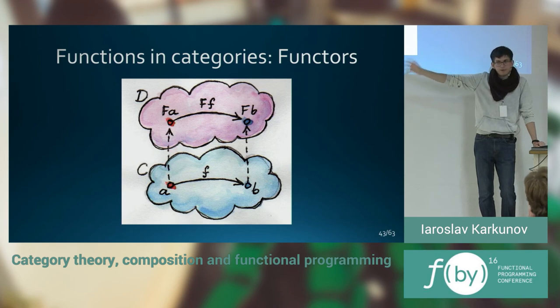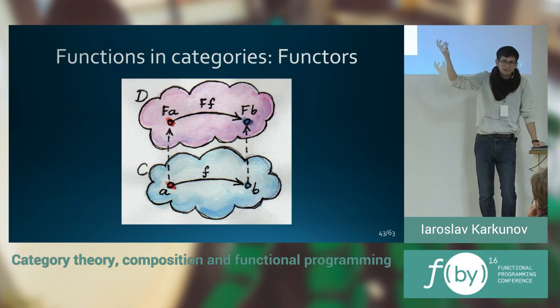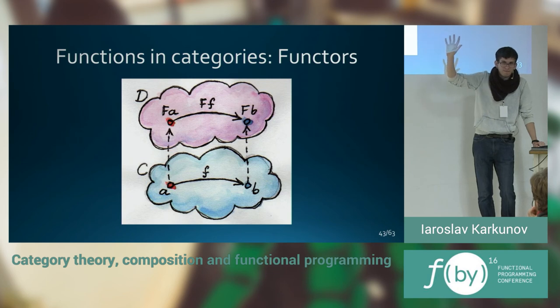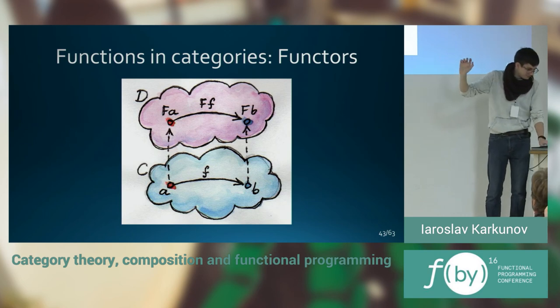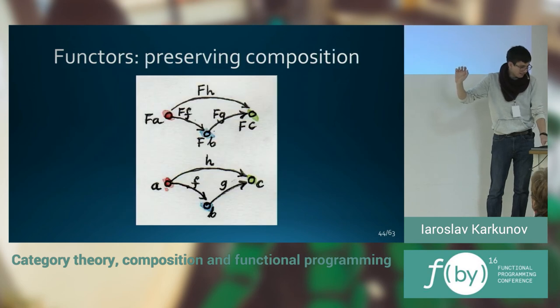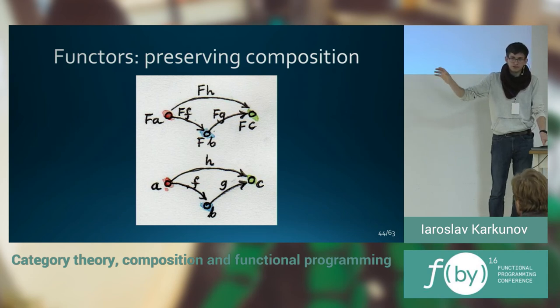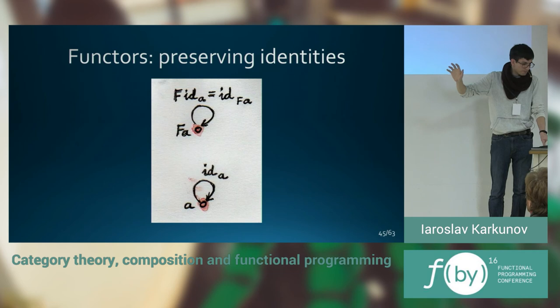They are mapping the relationships between objects. If you transfer that to programming, it means that those are lifting the functions to the higher scope. It's like fmap in Haskell. Functors must preserve composition. They will not tear any relationship between objects. There is some type of continuity there.